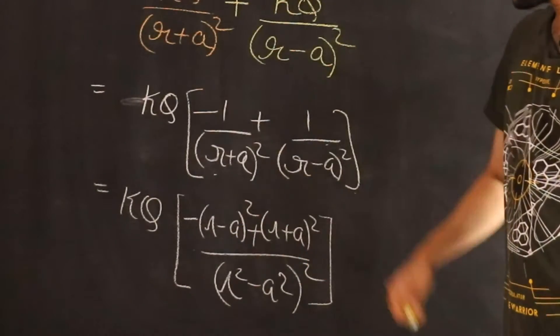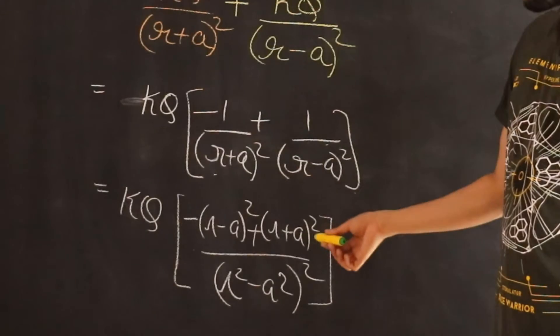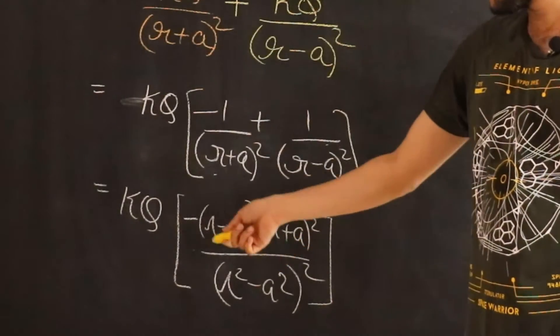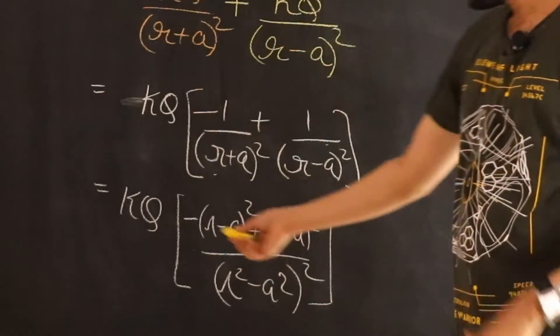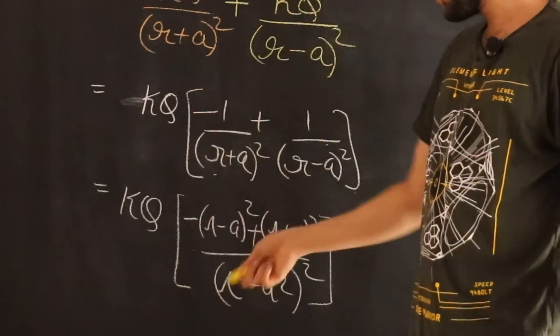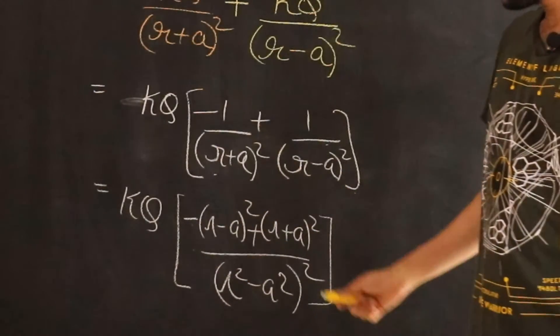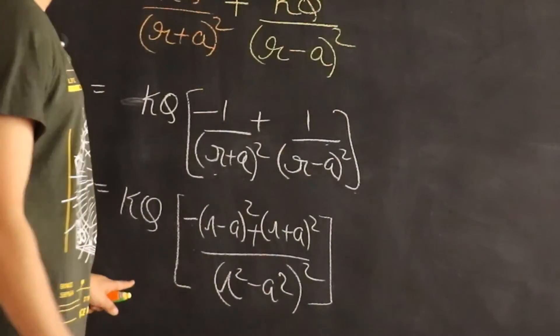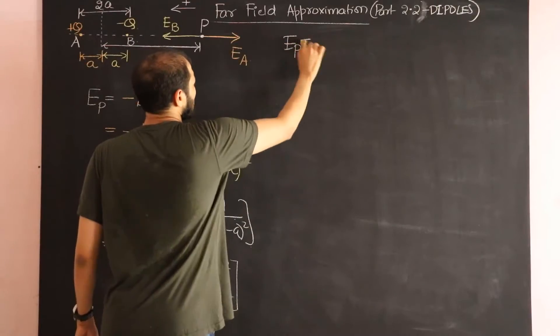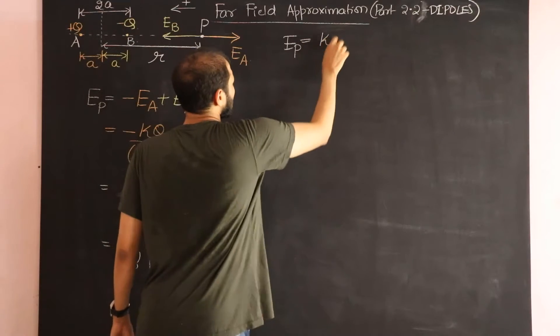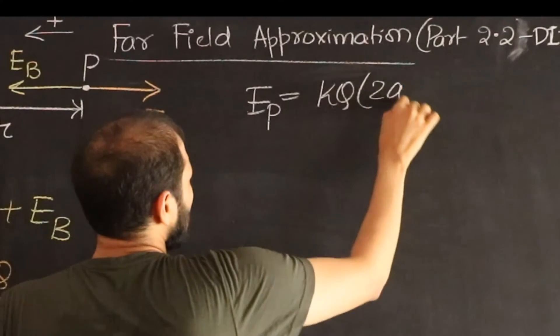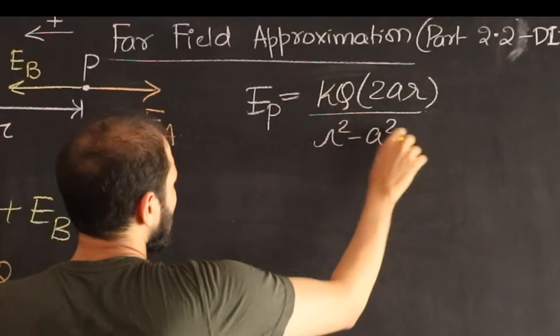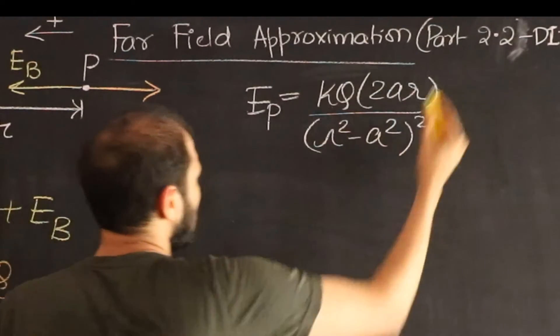Now let's expand this. The expansion of r plus a whole squared is r squared plus a squared plus 2ra. Here the expansion is also r squared plus a squared, but minus 2ra. Due to the minus sign, r squared, r squared and a squared, a squared cancels. And what I end up with now is a plus 2ar and a plus 2ar. You end up getting kq into 2ar divided by r squared minus a squared, the whole squared.